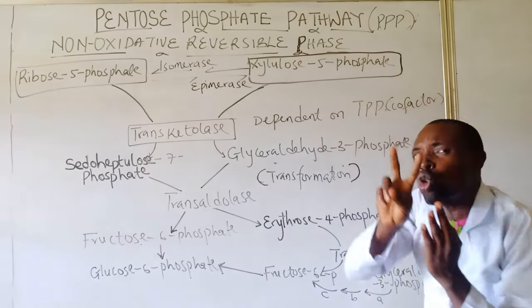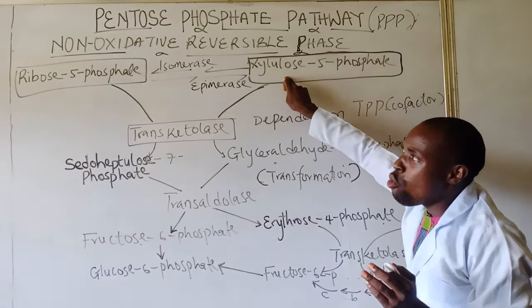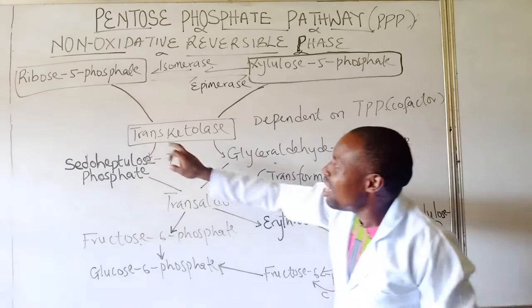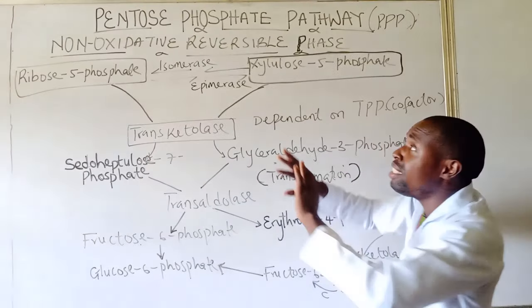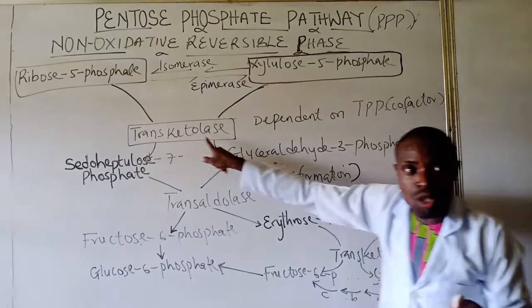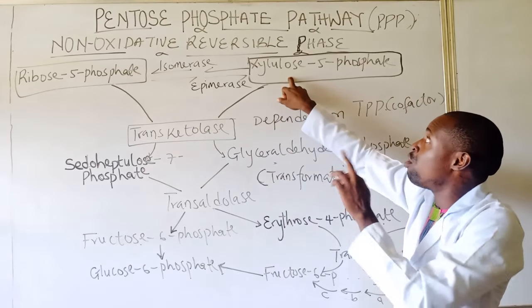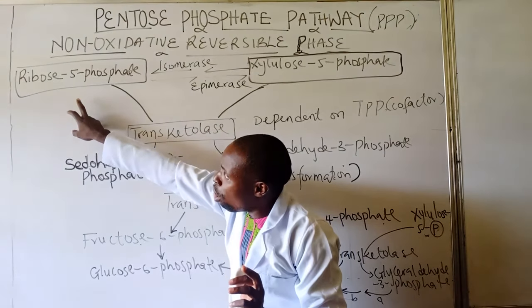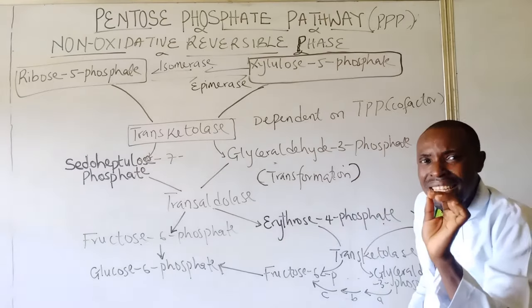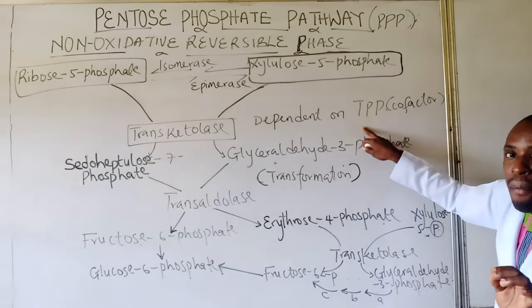In the second step, since we have two molecules of xylulose-5-phosphate, one molecule of this xylulose-5-phosphate will combine with a single molecule of the ribose-5-phosphate. The enzyme that is involved is called the transketolase. In this non-oxidative pathway, the two key enzymes that are very crucial and important are the transketolase and the transaldolase.